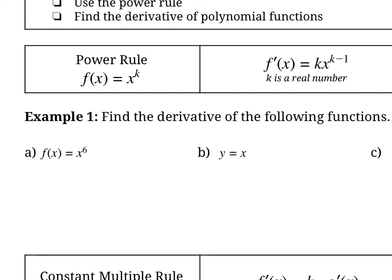So let's do the first question. For f of x equals x to the power of 6, f prime of x is just going to be 6 that comes down in front, and then x with the exponent of 5 — we just reduce that exponent by 1. That's the derivative of x to the power of 6.